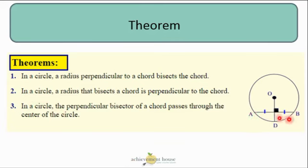So AB is broken up into two equal parts. In a circle, a radius that bisects a chord is perpendicular to the chord. So that's kind of vice versa.